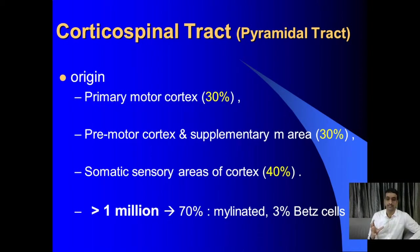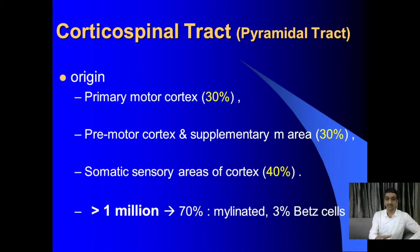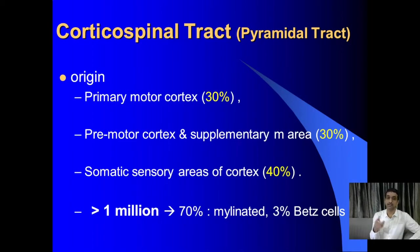The tract carries 1 million fibers on each side. 30% of the fibers originate from the primary motor cortex, 30% from the premotor and supplementary motor areas together, and 40% — interestingly — are contributed by the somatosensory cortex. 70% of fibers in the tract are myelinated, and 3% originate from giant pyramidal cells known as Betz cells. That is one reason for the name 'pyramidal tract.' Another reason is that the fibers form pyramids in the medulla oblongata and then decussate to the other side.